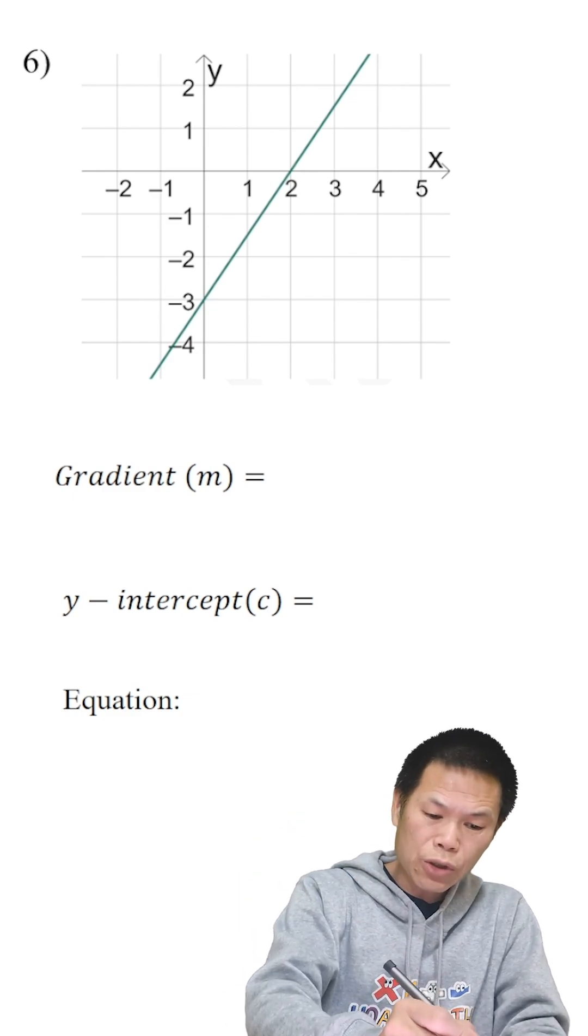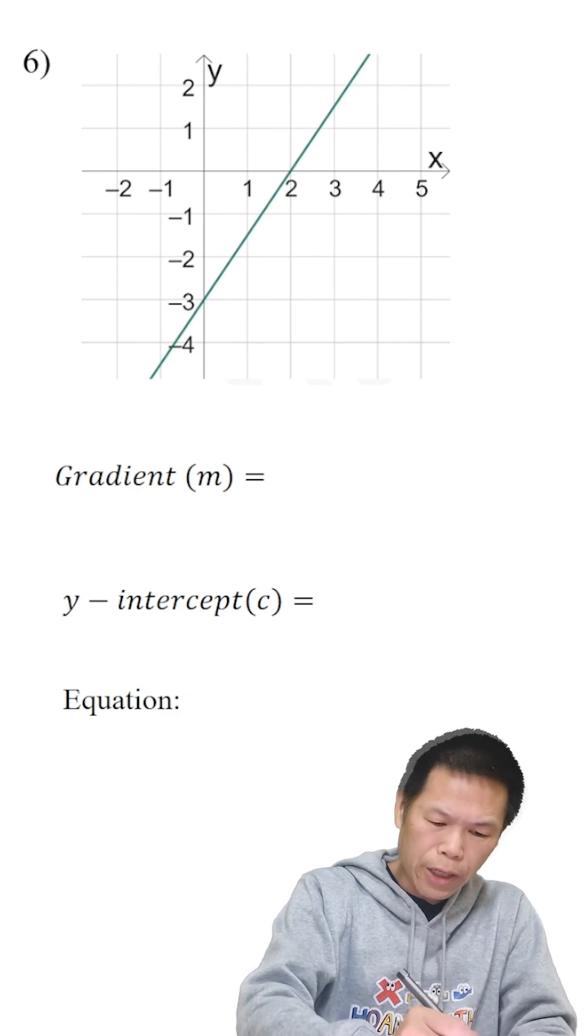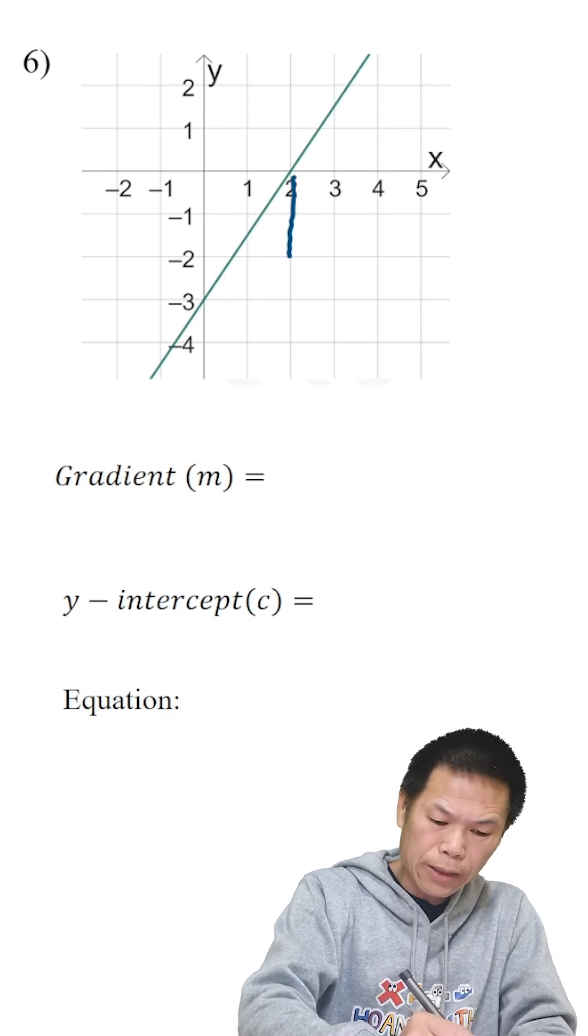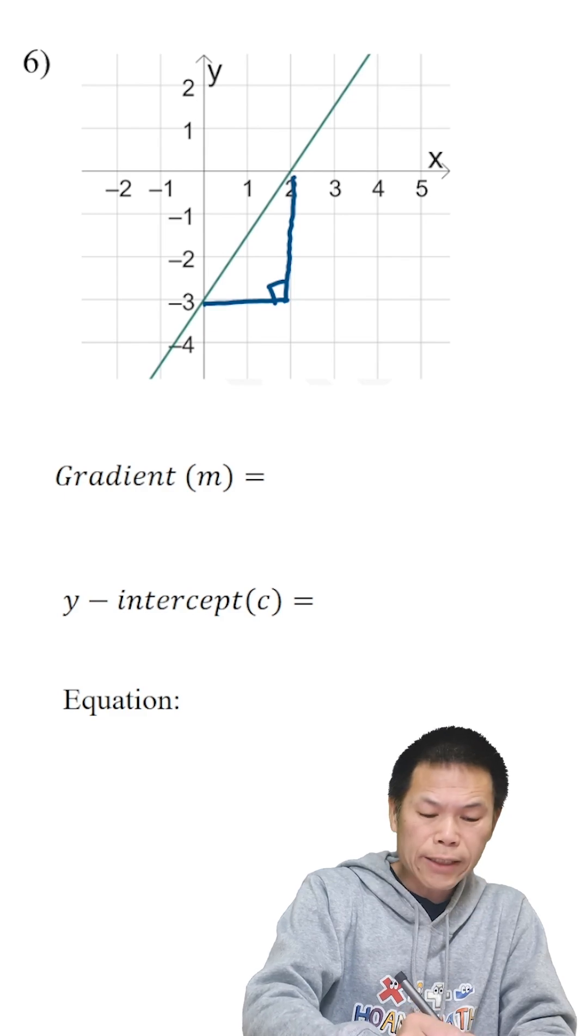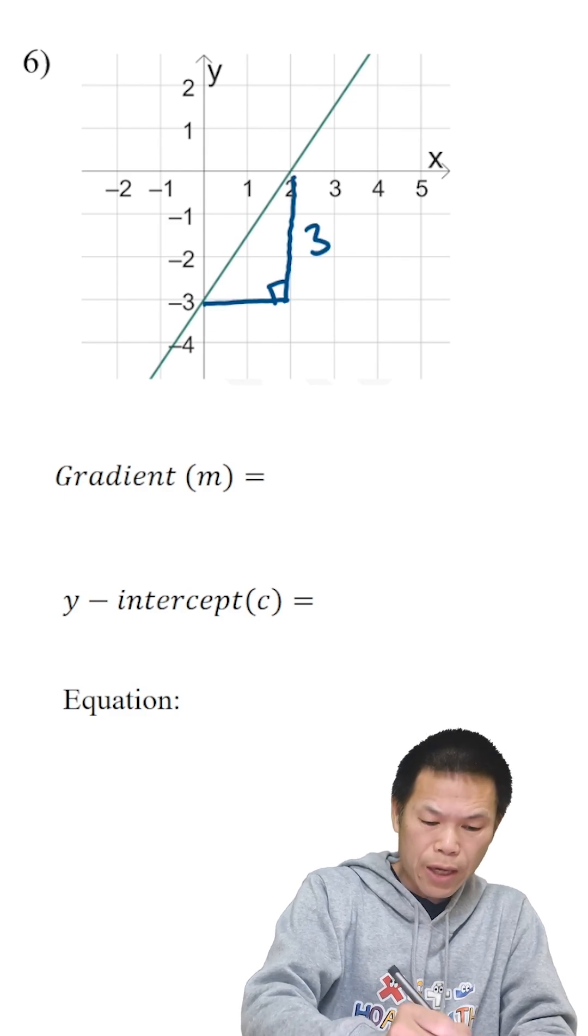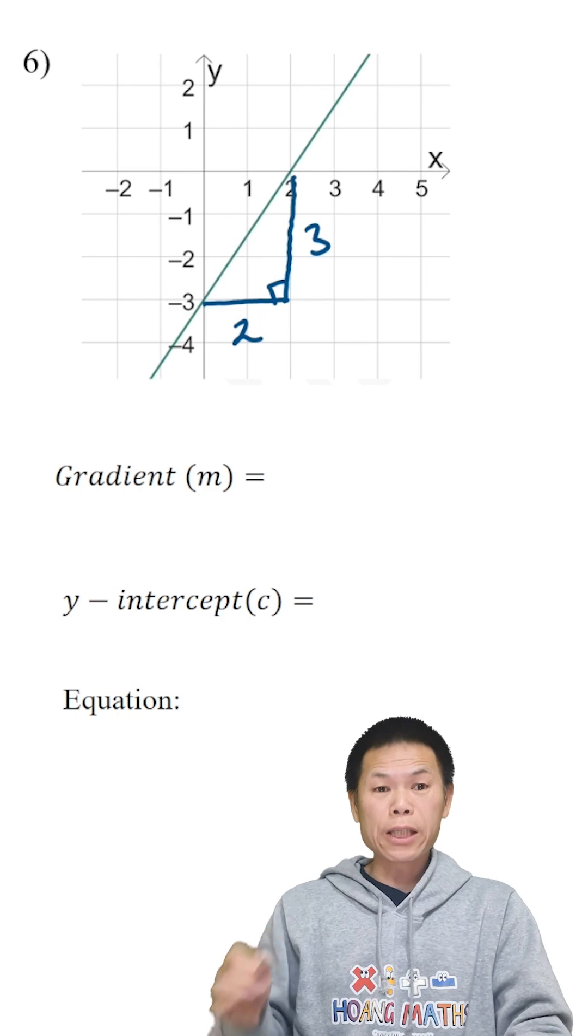Let me just quickly draw it so I can draw a triangle like this. So there you go. Rise is 1, 2, 3, and run is 2.